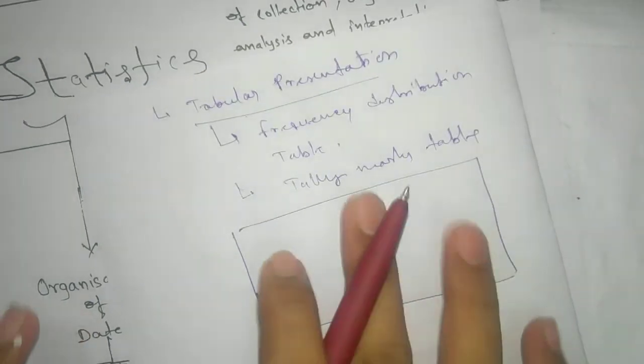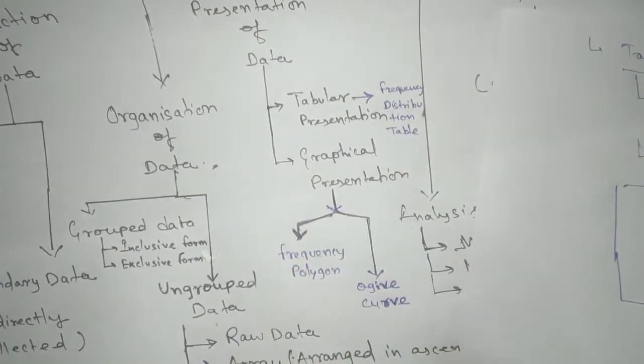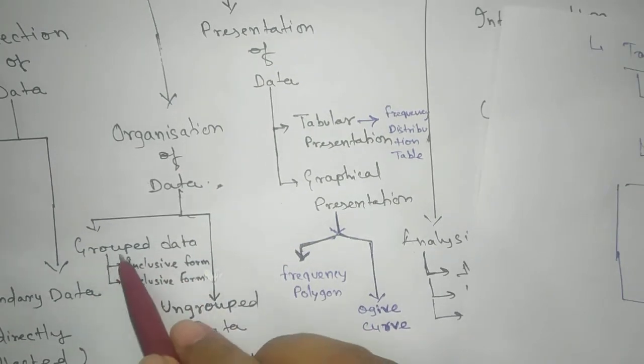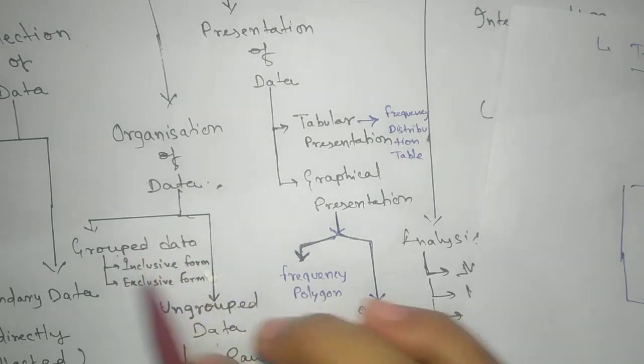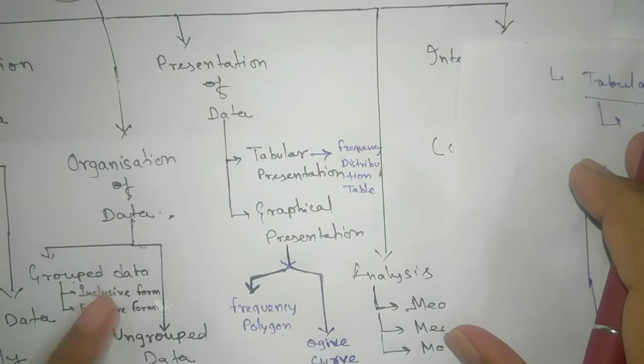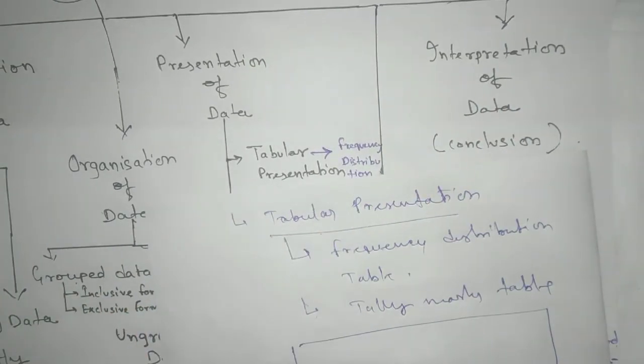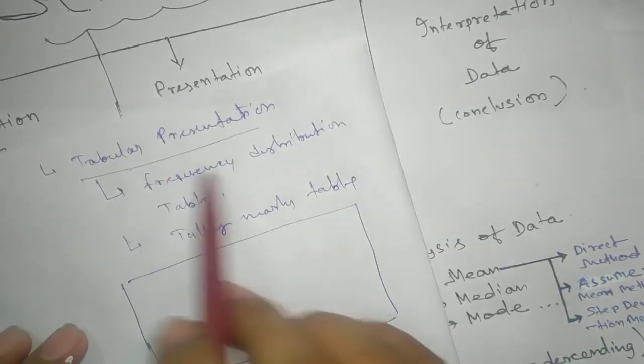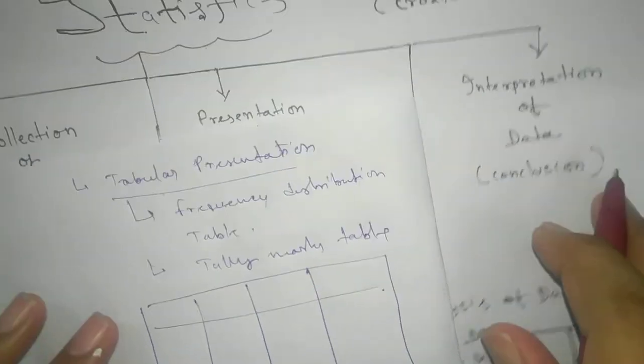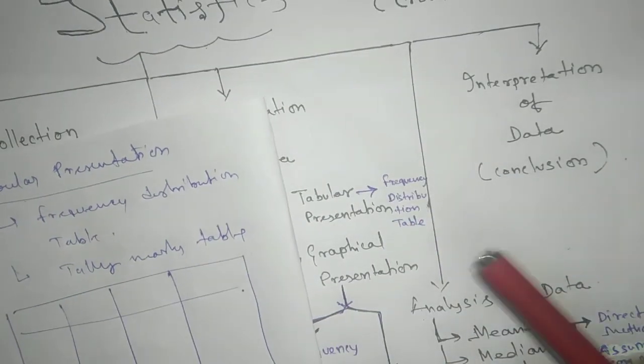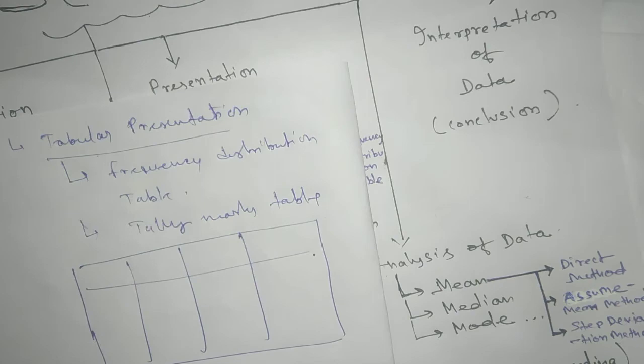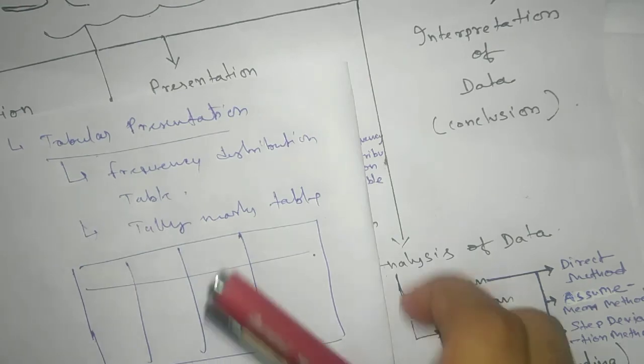For class nine we have mean, median, mode for group data. For ten and other concept. So here in tabular presentation we need to table like that. This is the fourth one to analyze the data, we use tabular data presentation. It helps us lots.